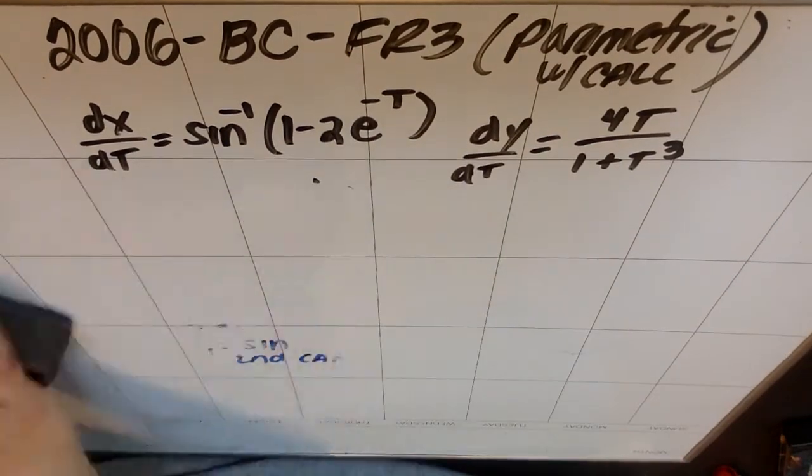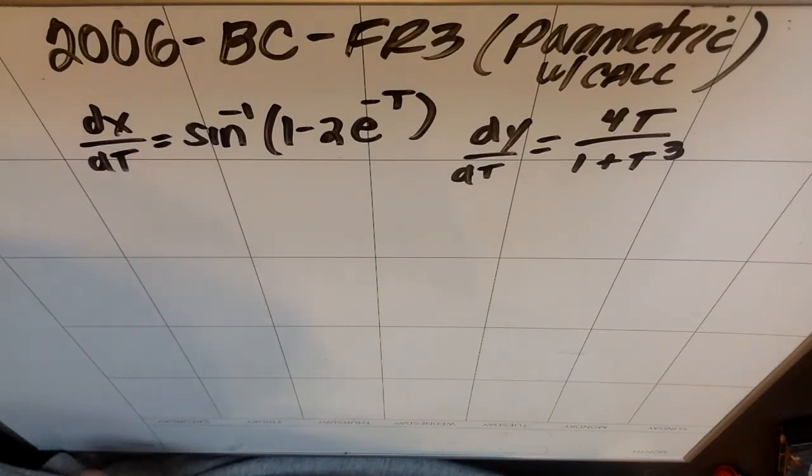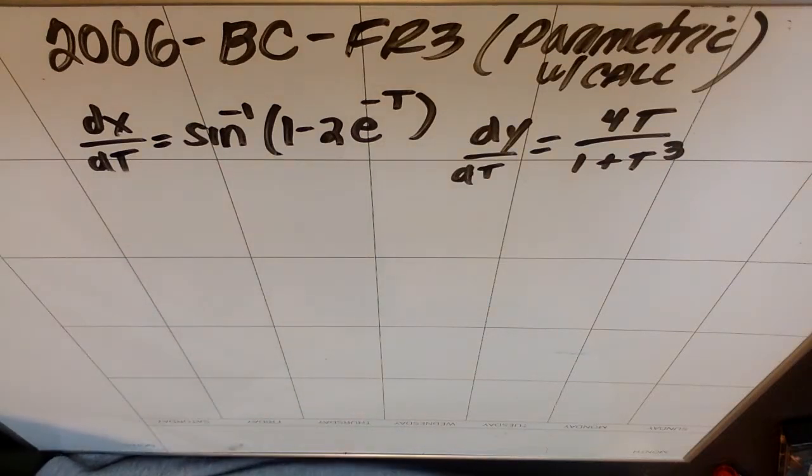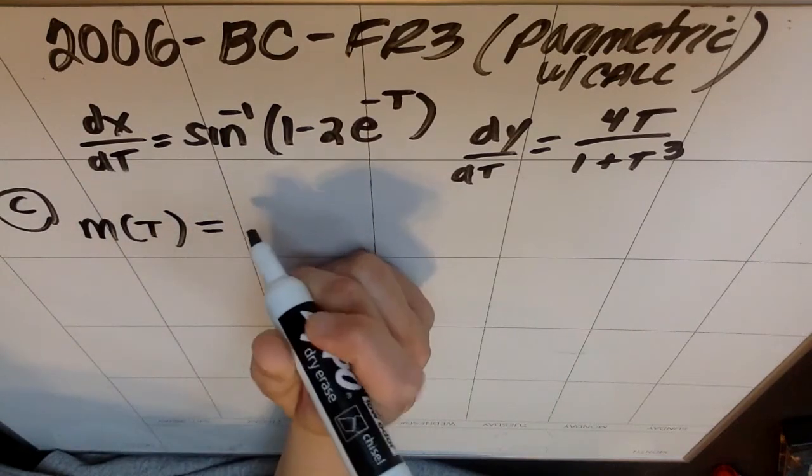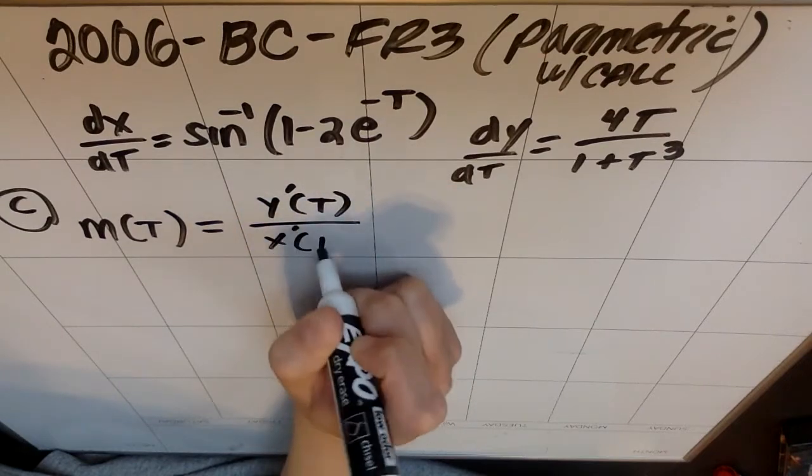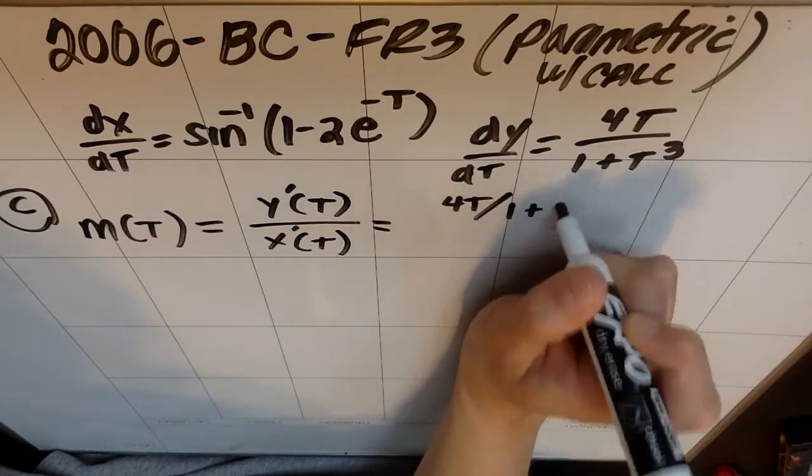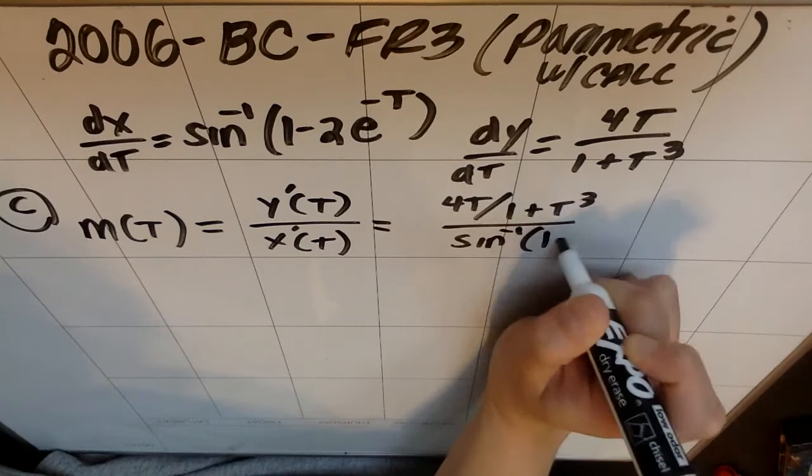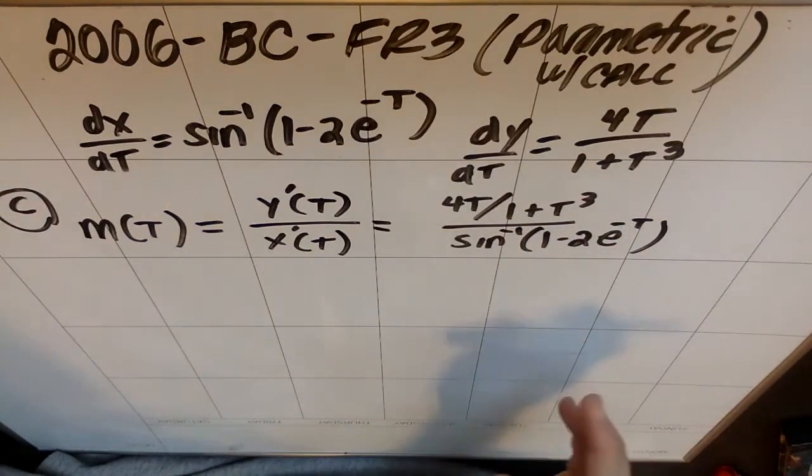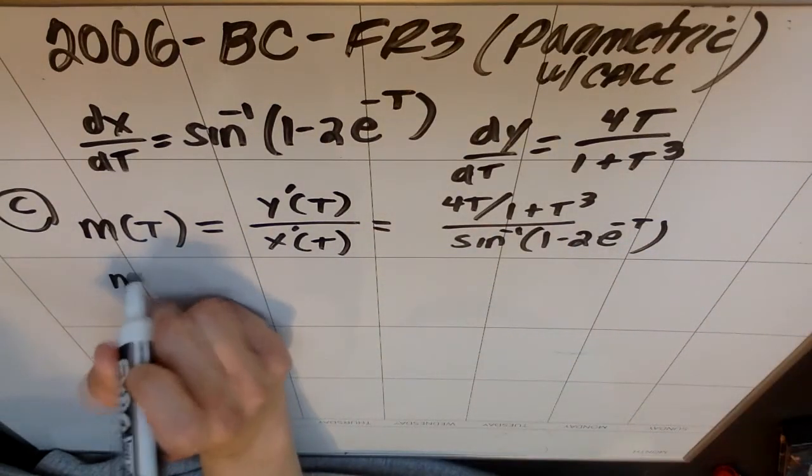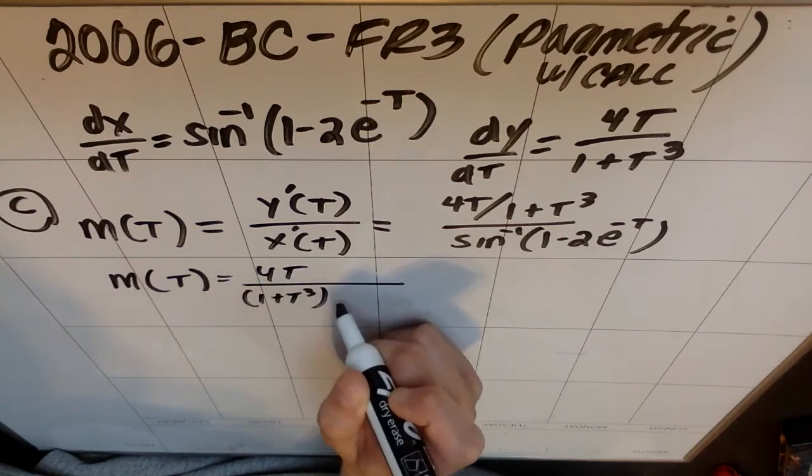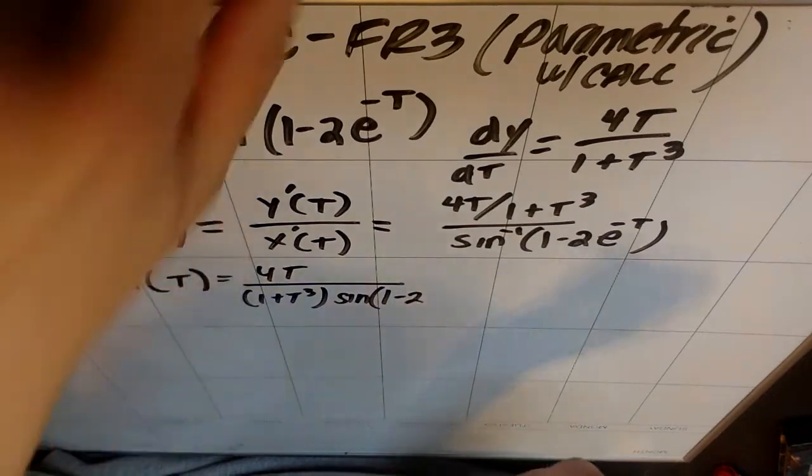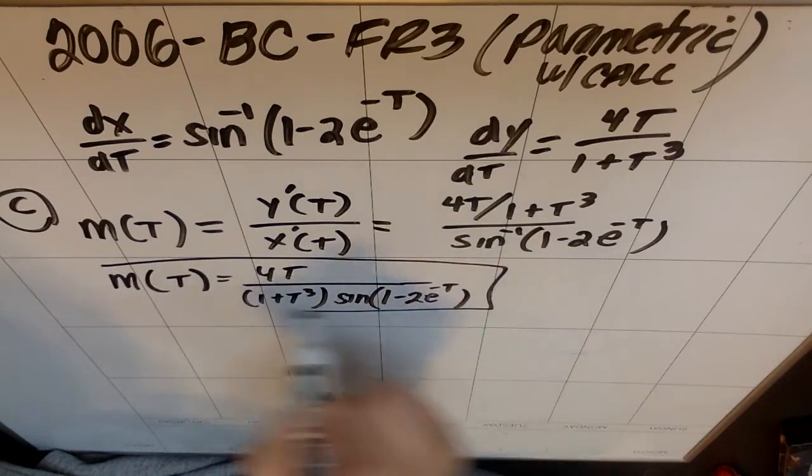Part C: Let m(t) denote the slope of the line tangent to the curve at the point x(t), y(t). Write an expression for m(t) in terms of t. For part C, m(t) should be essentially y prime of t over x prime of t, which are two values that we were given. We were given 4t over 1 plus t cubed all over this inverse sine of 1 minus 2e to the negative t. So that's the expression that they want. How nice you want to make it is up to you if you want to put the 4t by itself on the top and the 1 plus t cubed times the inverse sine of 1 minus 2e to the negative t on the bottom. That's probably the most simplified version.